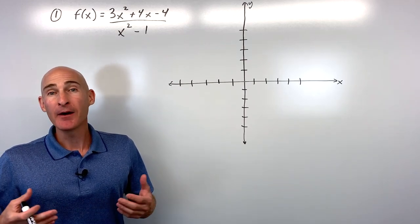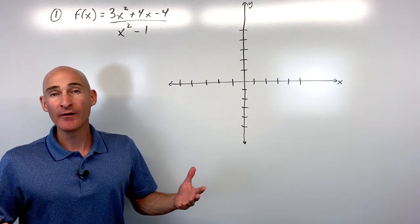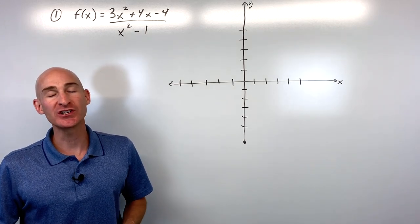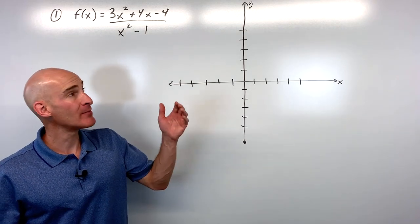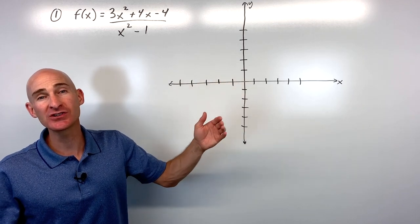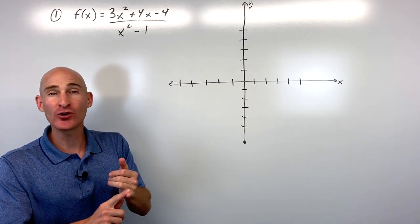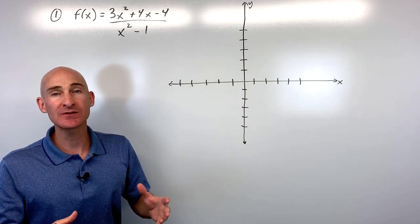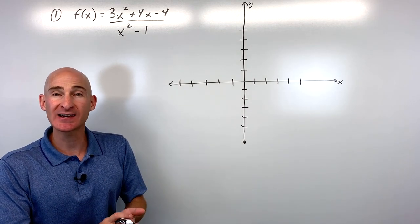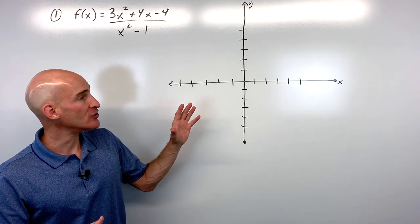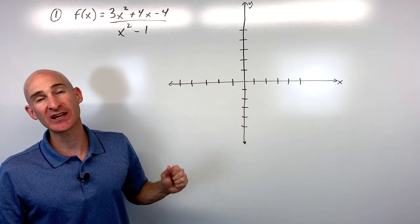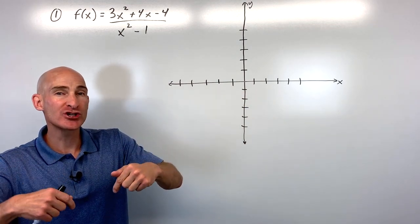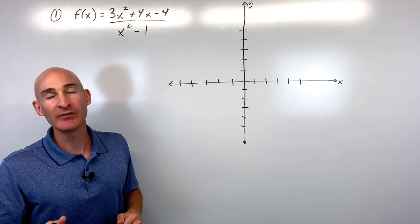I'm super excited to be joined by Mr. Witt of Fort Bend Tutoring YouTube channel. We're going to be going through six questions, alternating one at a time, talking about how to graph rational functions. You'll be learning how to find asymptotes — slant or horizontal — how to find vertical asymptotes, x-intercepts, y-intercepts, how to do sign analysis, and how to get a good sketch of your graph. If you want the free worksheet, it's down in the description below.